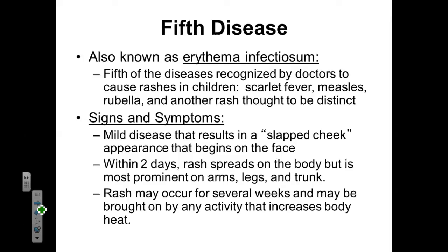Another skin disease grouped together with measles, mumps, and rubella is known as the fifth disease — traditionally named because it was the fifth classic rash-based disease that children would receive during childhood. The fifth disease is also known as Erythema Infectiosum. It's recognized by doctors as a rash in a child and can be mistaken for scarlet fever, measles, rubella, or another rash. The signs and symptoms include a slapped cheek appearance — it looks like the patient is blushing, with red cheeks.